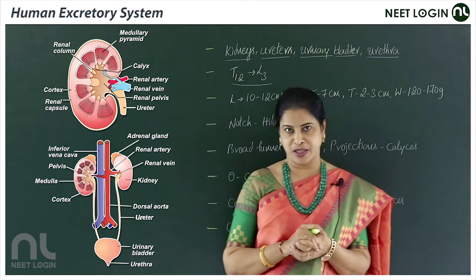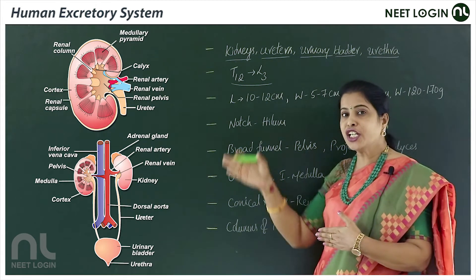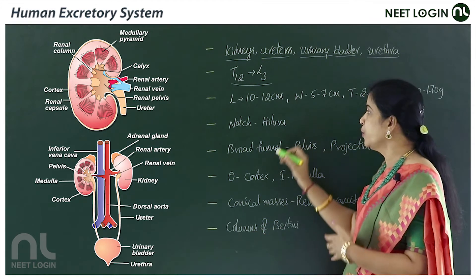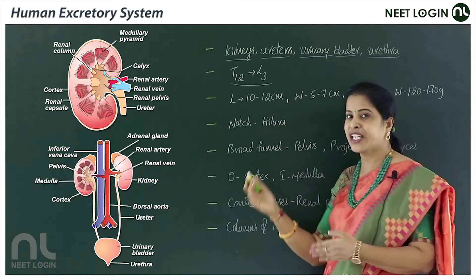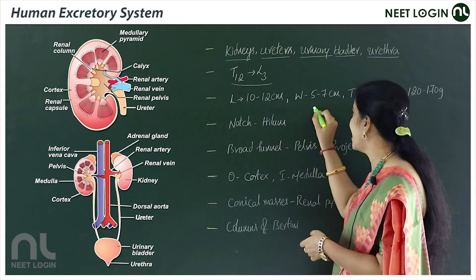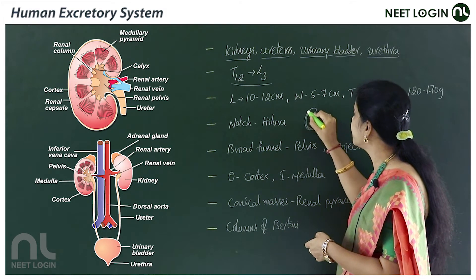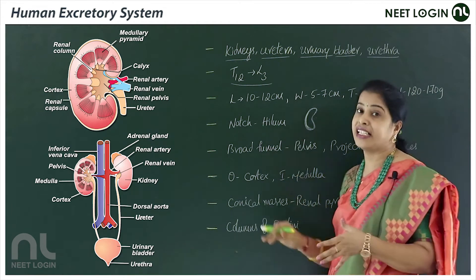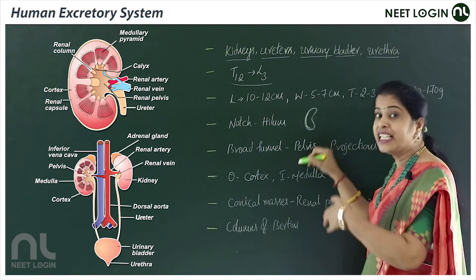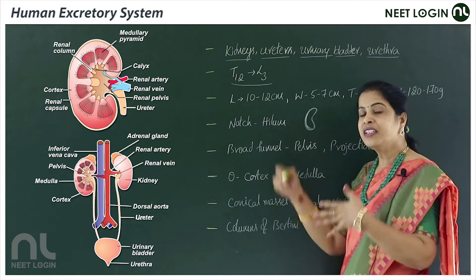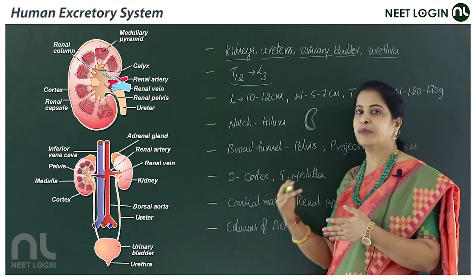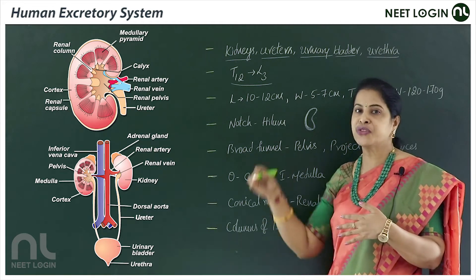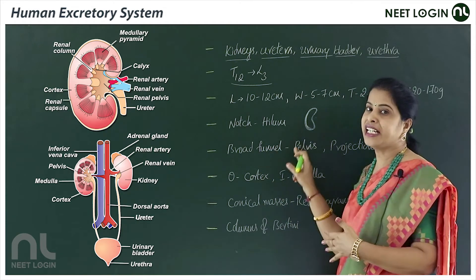In the sectional view of the kidney, the outer surface is convex and the inner surface is concave — just like a bean. On the inner concave side, there is a notch called the hilum. From the hilum, blood vessels pass through: the renal artery enters and the renal vein exits, along with nerves and lymphatic vessels.